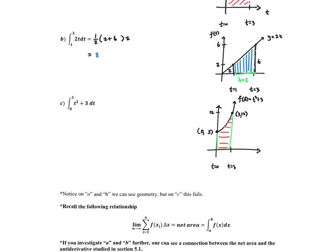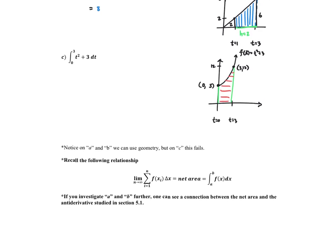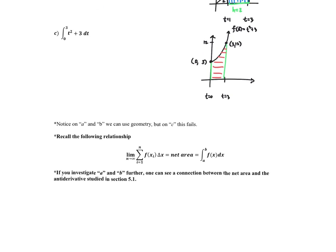Looking at these notes, on Parts A and B we can use geometry — trapezoid, rectangle, potentially a triangle — but C fails in this. Recalling previous lessons, we made a relationship between the rectangular approximation method and the net area, or the integral from A to B of F of X DX. As we take the limit as N goes to infinity of all N rectangles, it approaches the exact area underneath the curve.